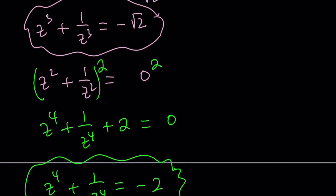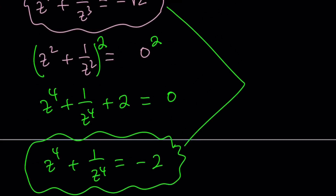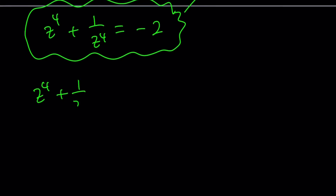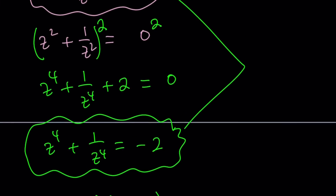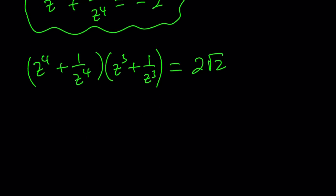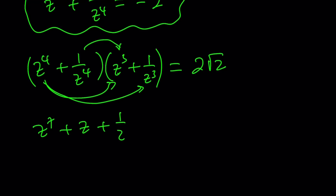So I got the cube and the 4th power. I'm going to go ahead and multiply them together. We'll take z to the 4th plus 1 over z to the 4th and multiply it by z cubed plus 1 over z cubed. z to the 4th plus 1 over z to the 4th is negative 2, and that is negative square root of 2, so the product is 2 root 2. Distributing: z to the 4th times z to the 3rd is z to the 7th; z to the 4th times 1 over z cubed gives z; 1 over z to the 4th times z cubed gives 1 over z; and 1 over z to the 4th times 1 over z cubed gives 1 over z to the 7th.